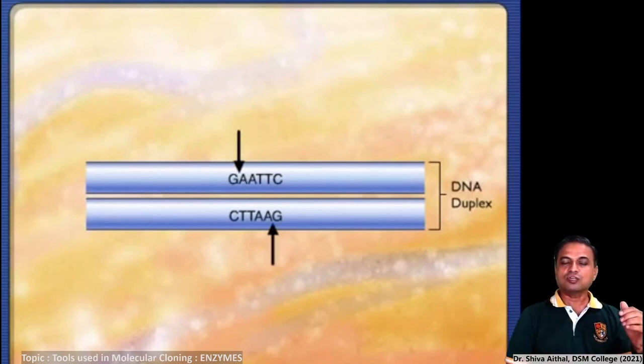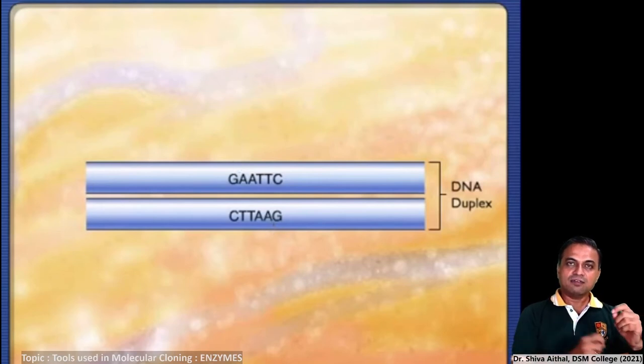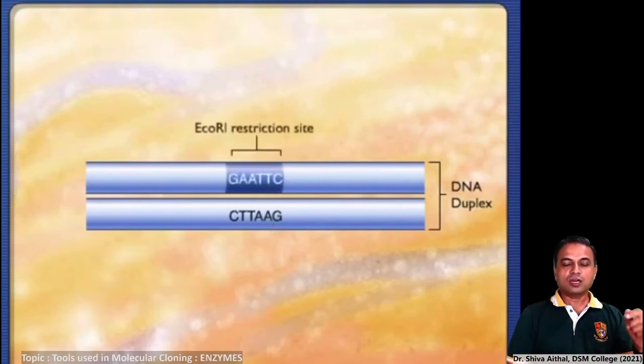So this is how restriction endonucleases are functioning, and these are very important tools in molecular cloning or recombinant DNA technology or genetic engineering.